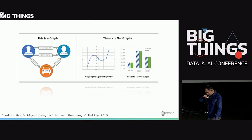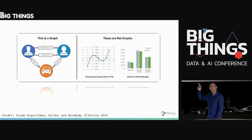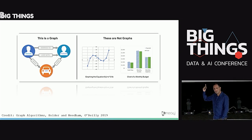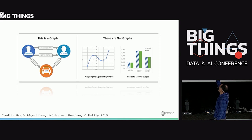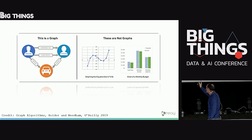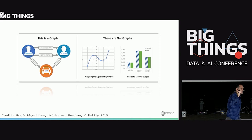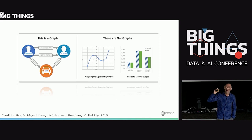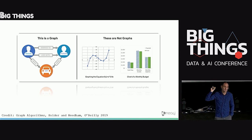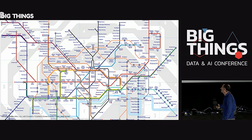Another definition: the thing on the left is a graph. The thing on the right is a chart. I don't want to see people saying 'look at my bar graph' — that makes me cross. We're going to go with the thing on the left. Credit to Hodler and Needham who wrote the Graph Algorithms book. If you want a copy of that book, which has an excellent chapter on AI, it's available for free at neo4j.com. It's a great book.